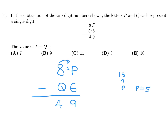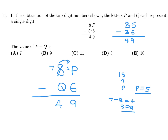Because we carried the 1, this drops down to 7. So then 7 minus Q equals 4, which means Q equals 3. Let's double check by plugging in: P was 5 and Q was 3. Does this equal 49? Yes — 85 minus 36 is indeed 49. So P plus Q is 5 plus 3, which is 8. The answer is D.